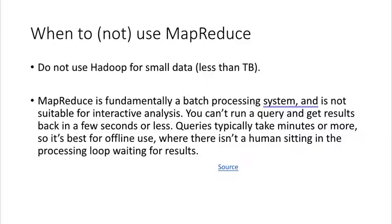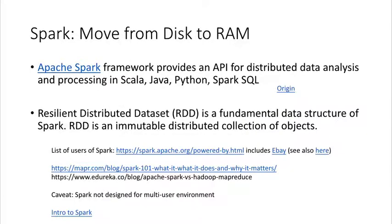In response to these limitations, a new technology called Spark was developed. Rather than using all of the disk for capacity, Spark does computations in RAM. Memory operations are much faster because you're not writing to and reading from disk every time. Spark is a bit more flexible than MapReduce and for most problems faster.